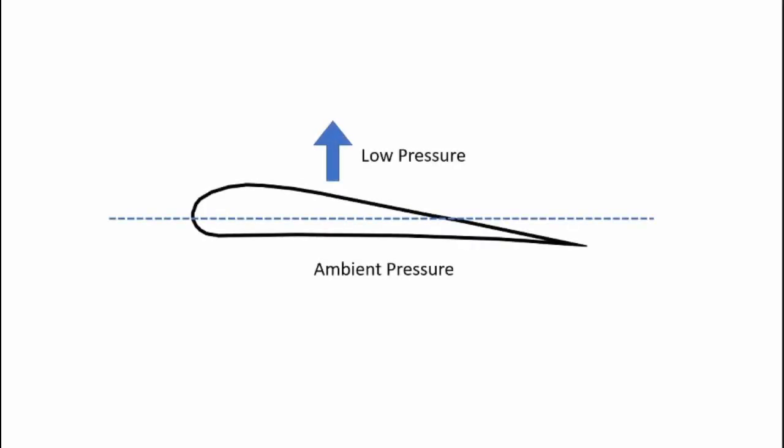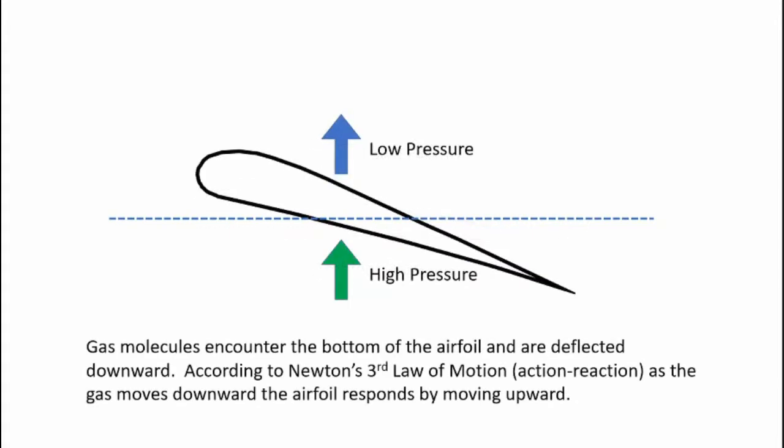Up to now we've been looking at the airfoil with its bottom surface parallel to the streamlines, but that's not usually the case. When an airplane flies it usually has an aerodynamic angle of attack. At zero angle of attack, the continuity equation and Bernoulli's equation state that low pressure will be generated and some lift will be created. When an angle of attack is applied, gas molecules encounter the bottom of the airfoil and are deflected downwards. According to Newton's third law of motion — action and reaction — as the gas moves downward the airfoil responds by moving upwards. This is the high-pressure component of lift.